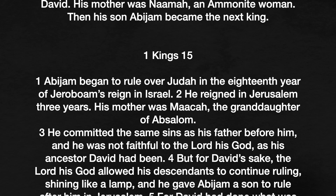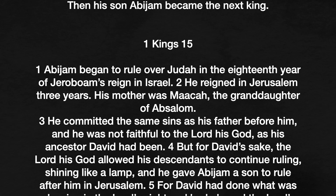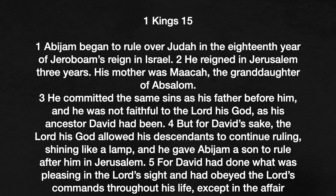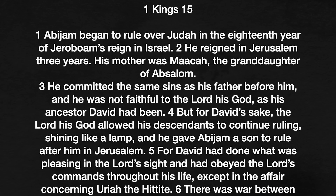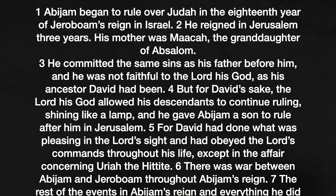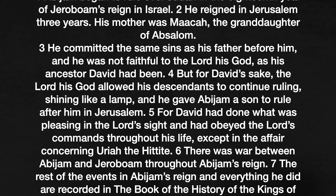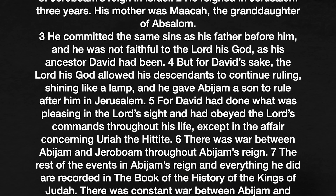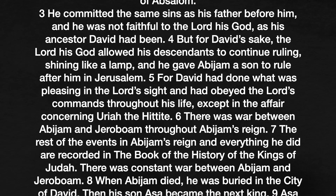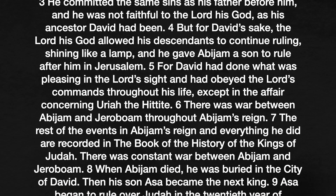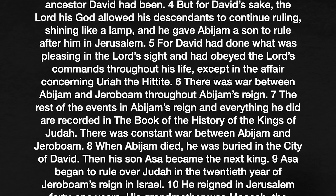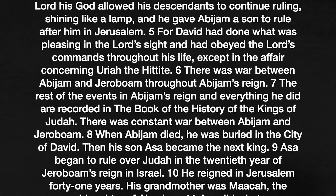1 Kings 15: Abijam began to rule over Judah in the eighteenth year of Jeroboam's reign in Israel. He reigned in Jerusalem three years. His mother was Maakah, the granddaughter of Absalom. He committed the same sins as his father before him and was not faithful to the Lord his God as his ancestor David had been. But for David's sake, the Lord his God allowed his descendants to continue ruling, shining like a lamp, and he gave Abijam a son to rule after him in Jerusalem. For David had done what was pleasing in the Lord's sight and had obeyed the Lord's commands throughout his life, except in the affair concerning Uriah the Hittite. There was war between Abijam and Jeroboam throughout Abijam's reign.